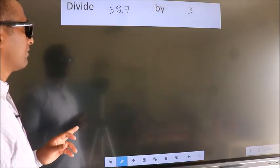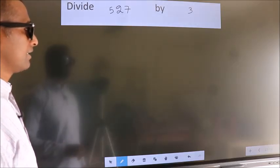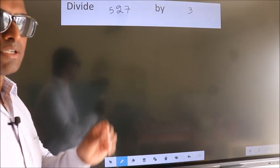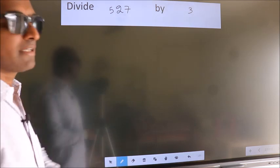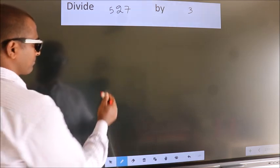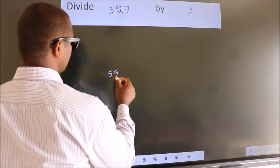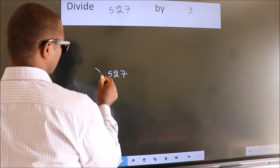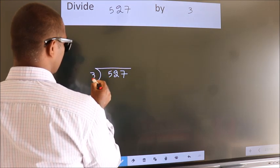Divide 527 by 3. To do this division, we should frame it in this way. 527 here, 3 here.